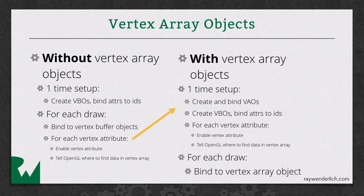However, if we use vertex array objects instead, a lot of that code that used to be inside the draw method is now moved up to the one-time setup phase. So now we create and bind vertex array objects. And while a vertex array object is active, we can do that initial setup code and it's associated with the vertex array object. And so when it becomes time to draw, we bind the vertex array object and that has the equivalent of binding the corresponding vertex array, enabling the corresponding vertex attributes, etc. So it's a lot simpler setup code.